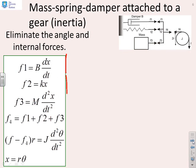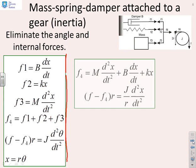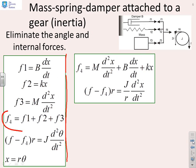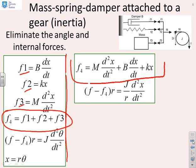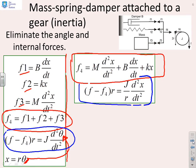We've rewritten the equations here—those are the same six equations we just had. First we're going to use f4 equals f1 plus f2 plus f3 and simply substitute in for f1, f2, and f3. You see we get your standard mass spring damper equation except the applied force is f4. We also wanted to remove theta: x equals r theta. If I put this theta in here where I've got J d²theta/dt², that equation becomes f minus f4 times r equals J over r times d²x/dt². All I've done is replace theta by x.